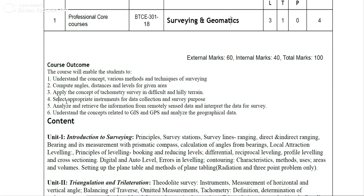The fourth outcome is to select appropriate instruments for data collection and survey purposes. In surveying, we use different instruments for data collection. We will learn different types of surveying performed in ancient times and in the modern era.